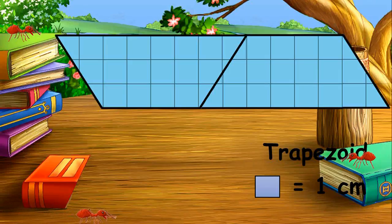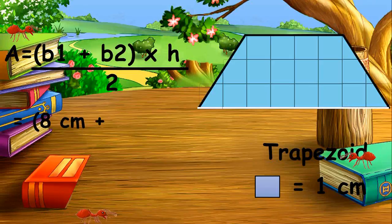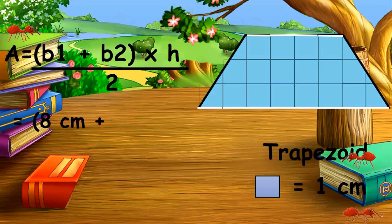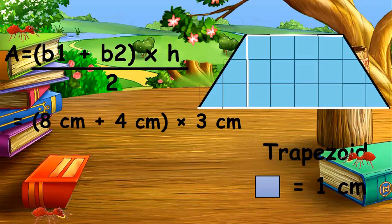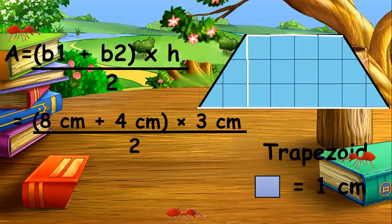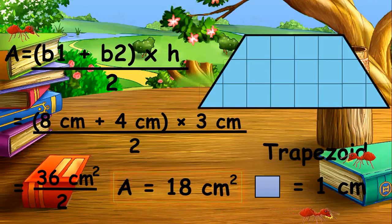Let us now solve by finding the lengths. Base 1 is 1, 2, 3, 4, 5, 6, 7, 8 — that's 8 centimeters. Base 2 is 1, 2, 3, 4 — that's 4 centimeters. The height is 1, 2, 3 — that's 3 centimeters. Area equals (8 + 4) times 3, which equals 36 square centimeters, divided by 2, equals 18 square centimeters. Therefore, the area of the trapezoid is 18 square centimeters.